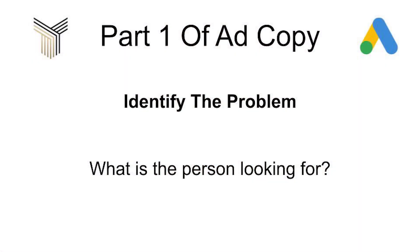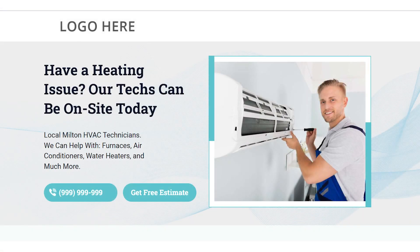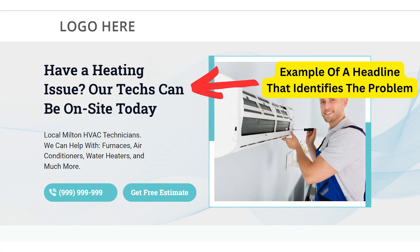We do this exactly the same with our headlines and descriptions when creating the actual Google ads. We need to identify the problem — what is our customer looking for? This could be simply reiterating the exact same thing they typed in. Maybe they typed 'pool installation California,' so our headline could say 'Looking for pool installation in California,' or 'Looking to create your dream backyard pool in California' — something that reiterates exactly what they typed in.